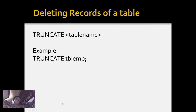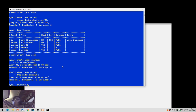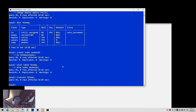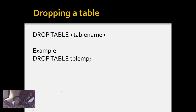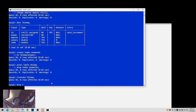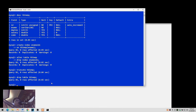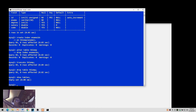We can also delete all records from a table using TRUNCATE followed by the table name. Truncate not only removes all rows but also resets AUTO_INCREMENT values, effectively resetting the table. For example: TRUNCATE tblm. To delete the table itself, use DROP TABLE tblm. After running SHOW TABLES, the database is now empty.